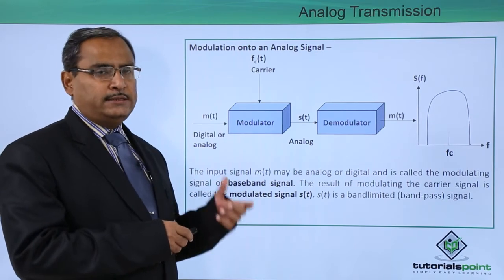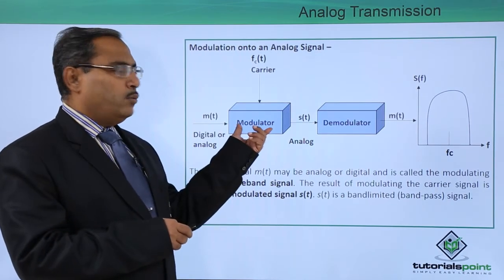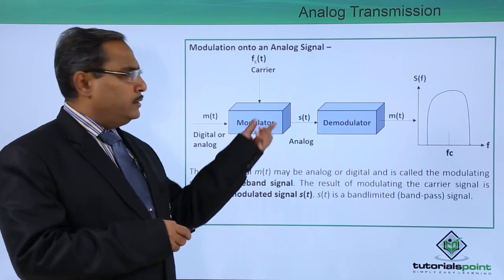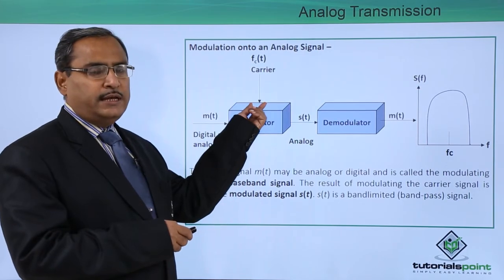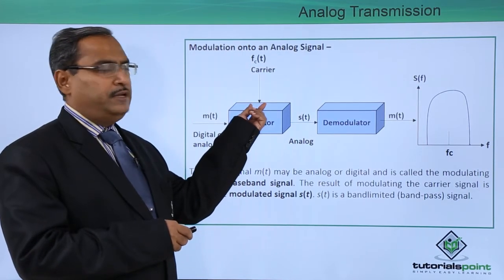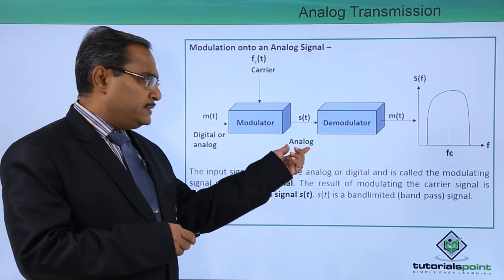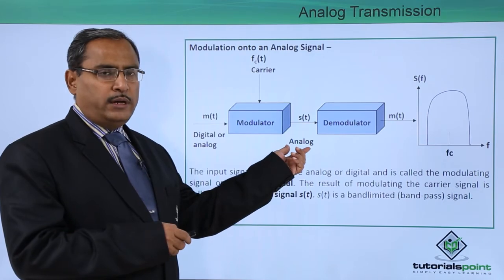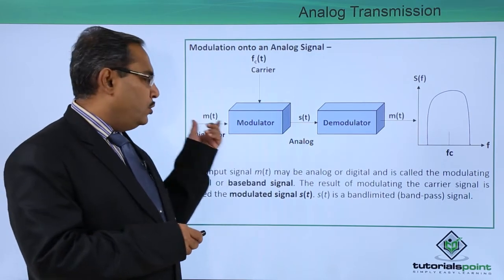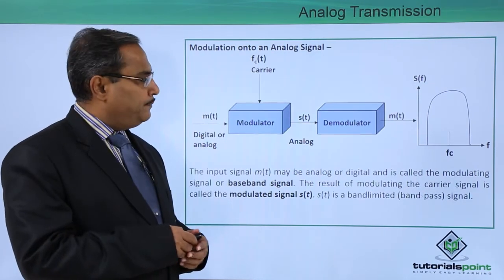That is known as the modulating signal. Here we are having one modulator which is having this carrier frequency f_c(t) as input. This analog signal is the modulated version of this digital or analog data.